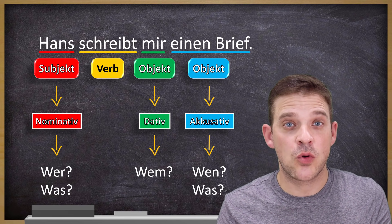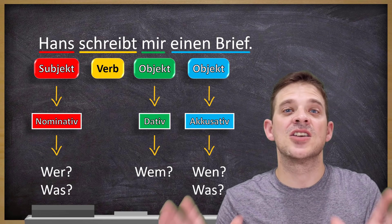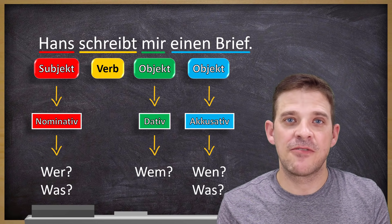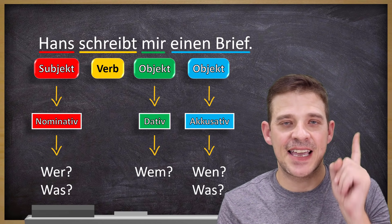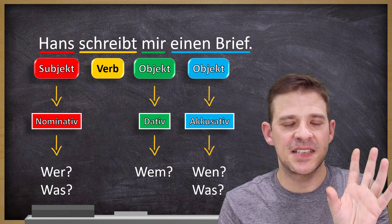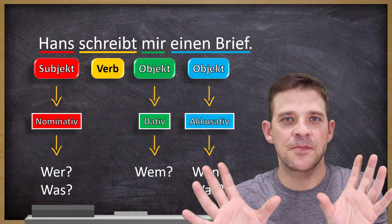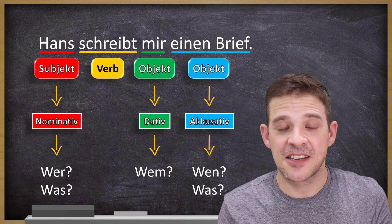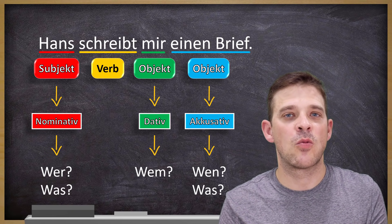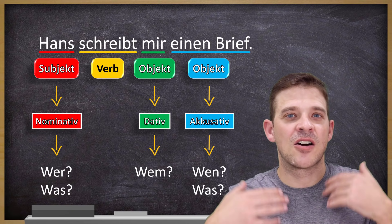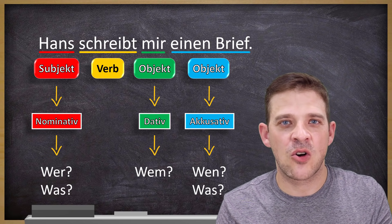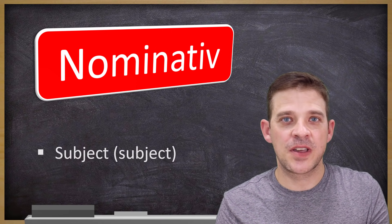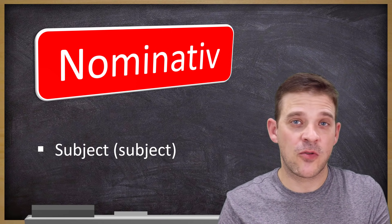Importantly, there is no 'was' for the dative — only 'wem.' This is because the dative case is usually only used for people, for human beings. Accusative can be for people and things. So whenever you have two objects — a person and a thing — the chances that the person is in dative and the thing is in accusative is almost 100 percent. This helps you figure out which object is accusative and which is dative.